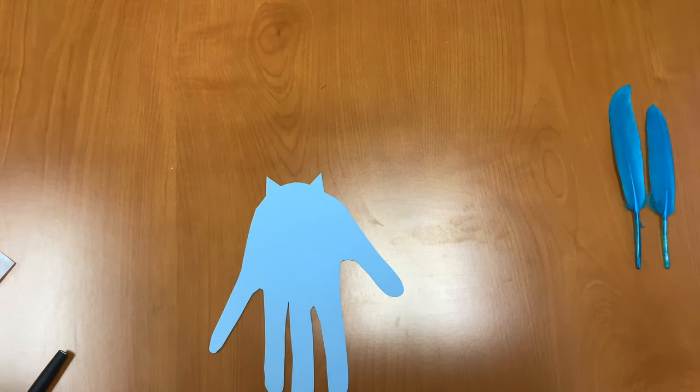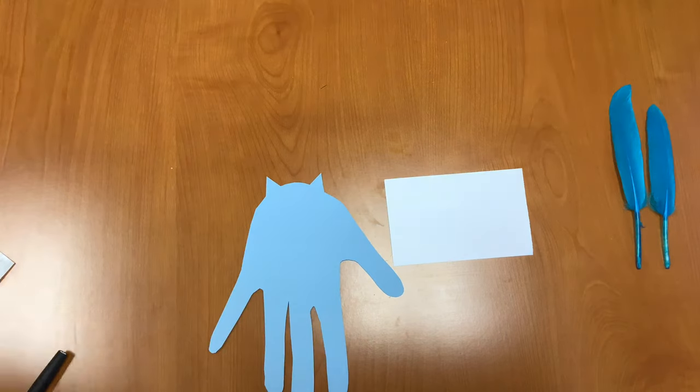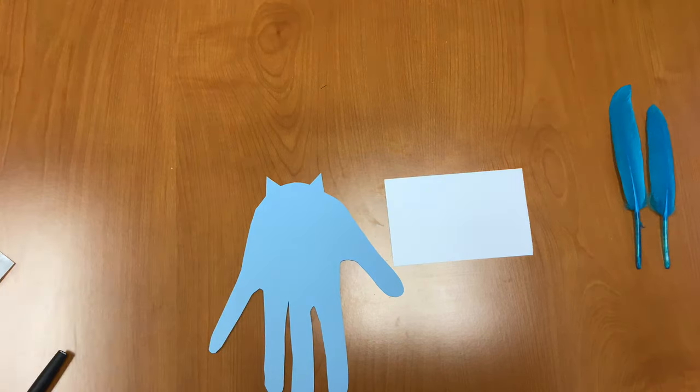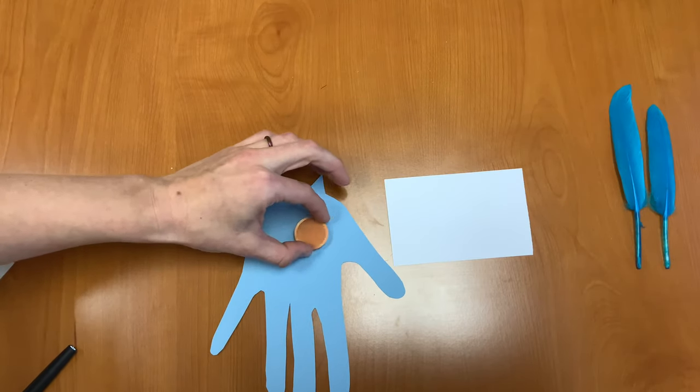Next we're going to take our white piece of paper and we're going to cut two circles out from it for the eyeballs. Now I'm going to use a quarter. You can use whatever you like and they'll be about this big on my owl.